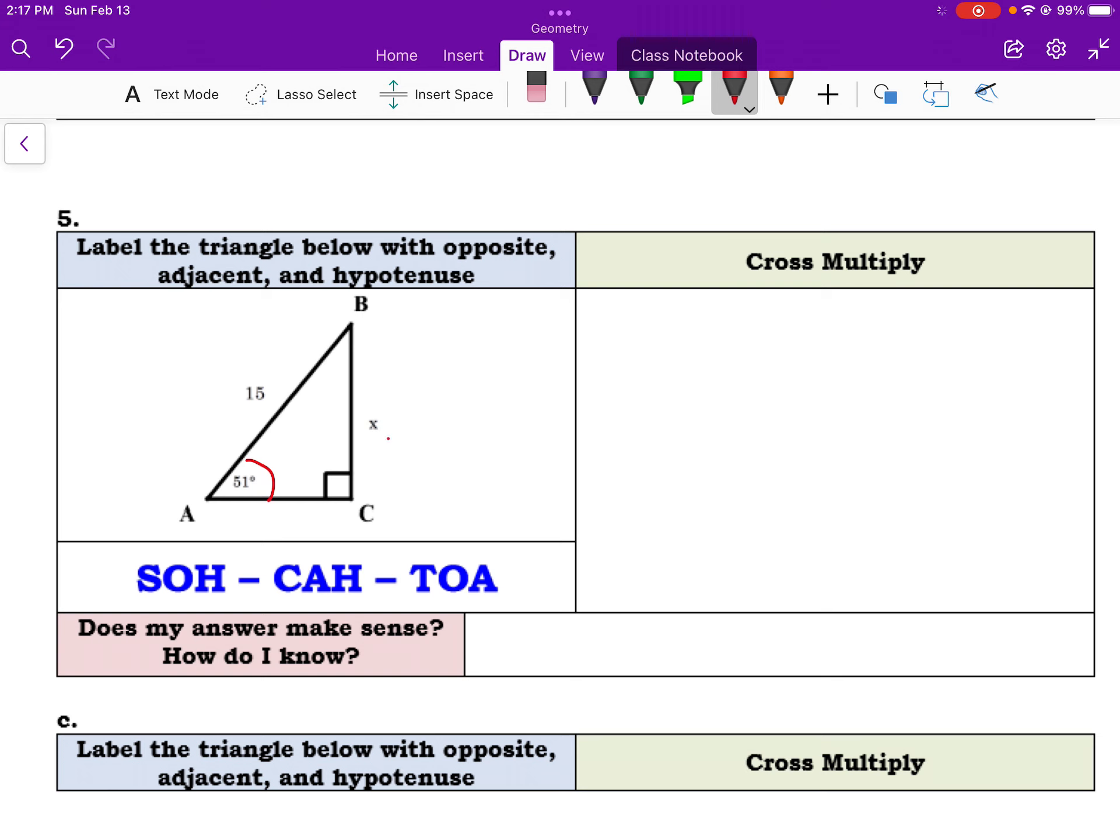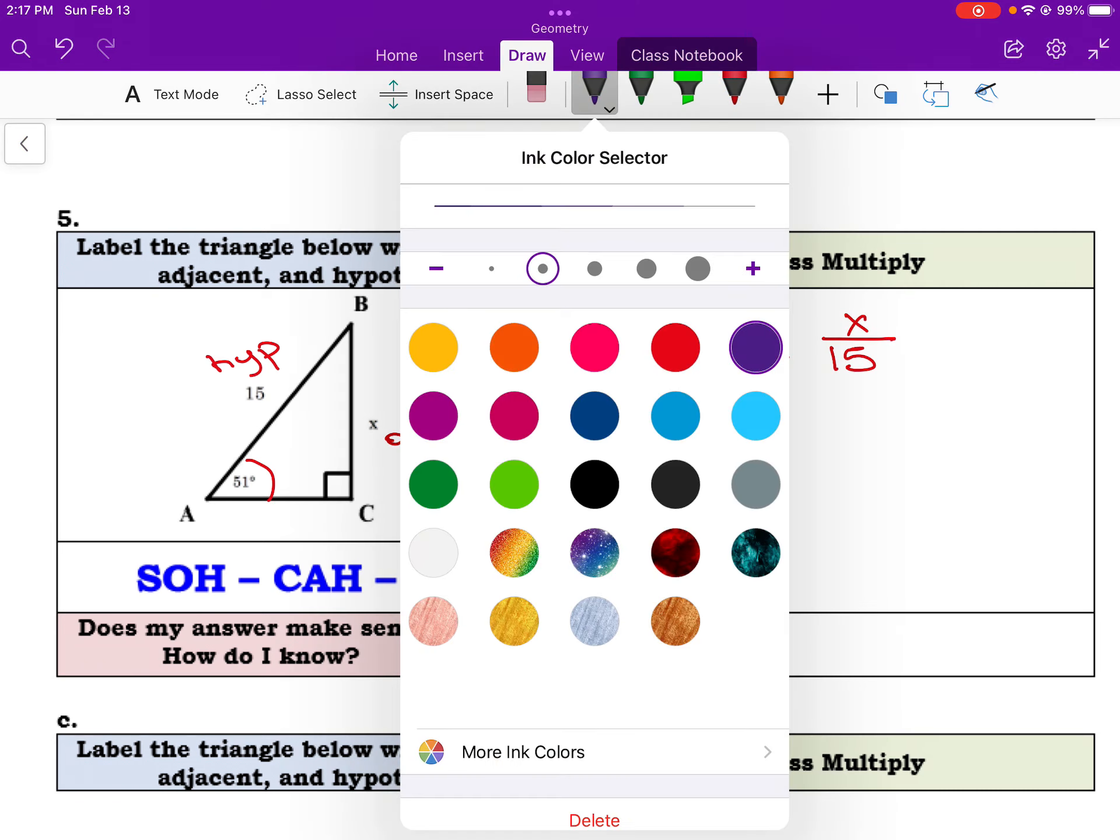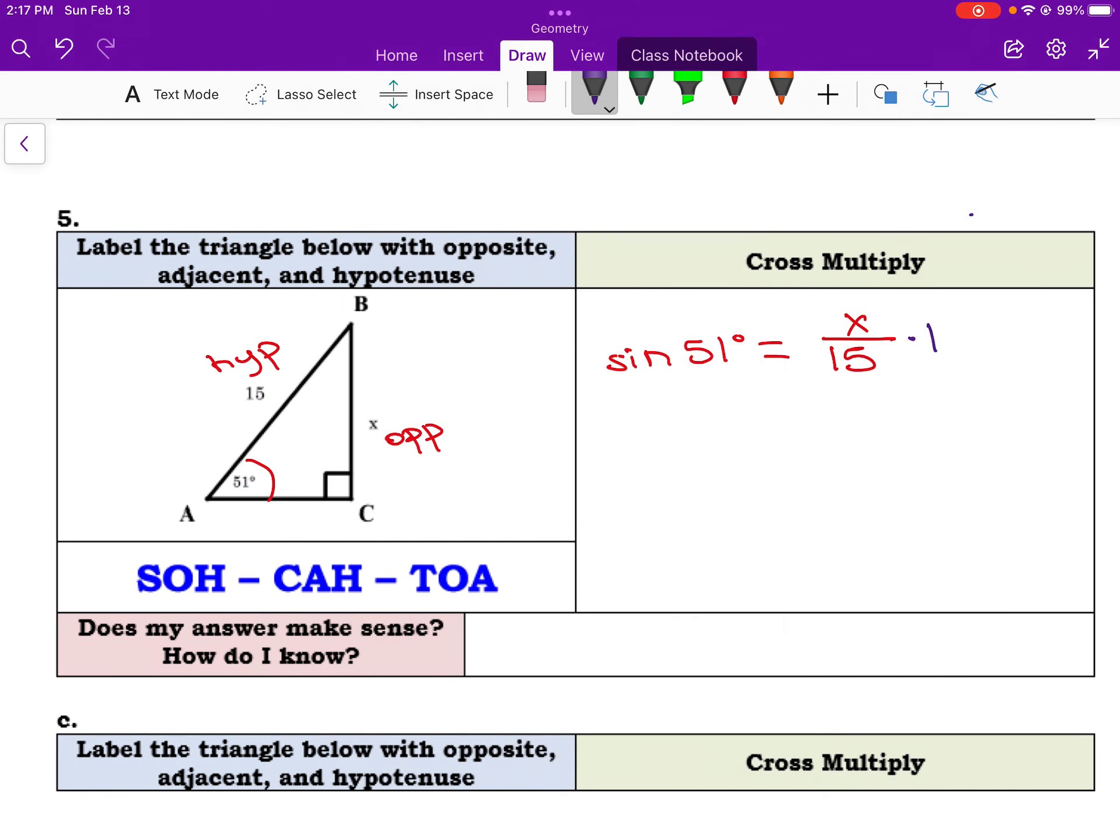Next one, if we're labeling with respect to 51 degrees, again, we have the opposite and the hypotenuse. So that's calling out the sine again. So sine of 51 degrees equals the opposite, which is x, over 15, which is the hypotenuse. Remember, we're trying to get x alone. So I want to, in this case, multiply both sides by 15. These cancel.